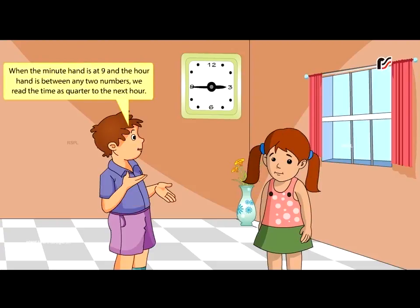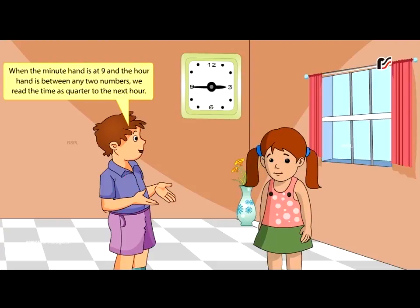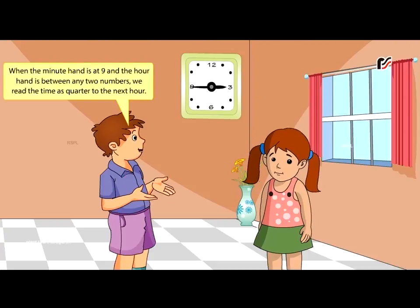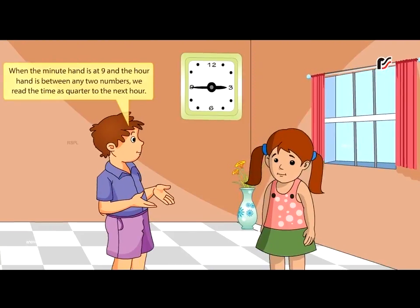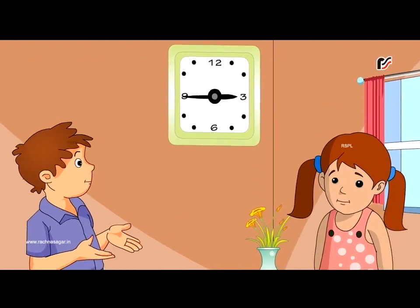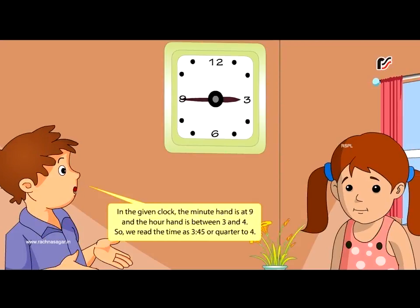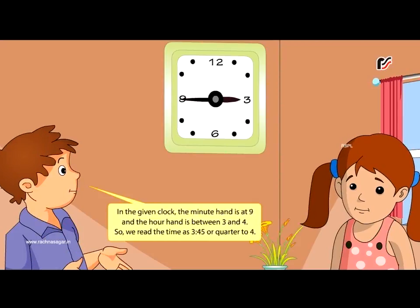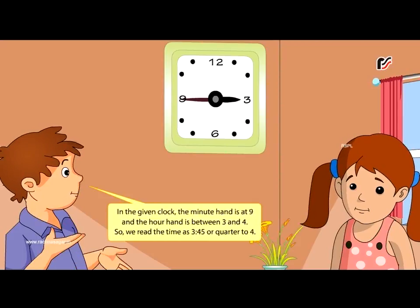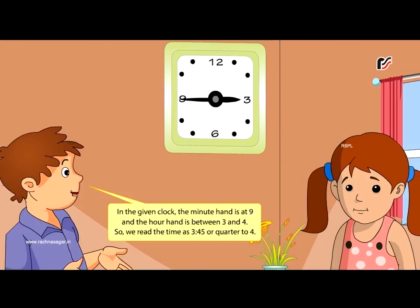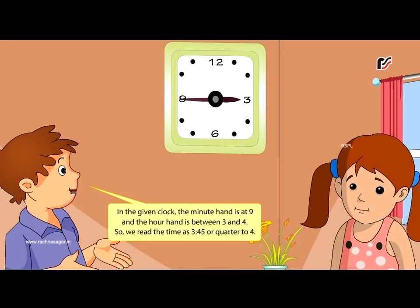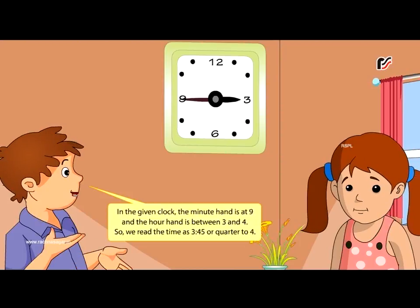When the minute hand is at nine and the hour hand is between any two numbers, we read the time as quarter to the next hour. In the given clock, the minute hand is at nine and the hour hand is between three and four. So we read the time as three-forty-five or quarter to four.